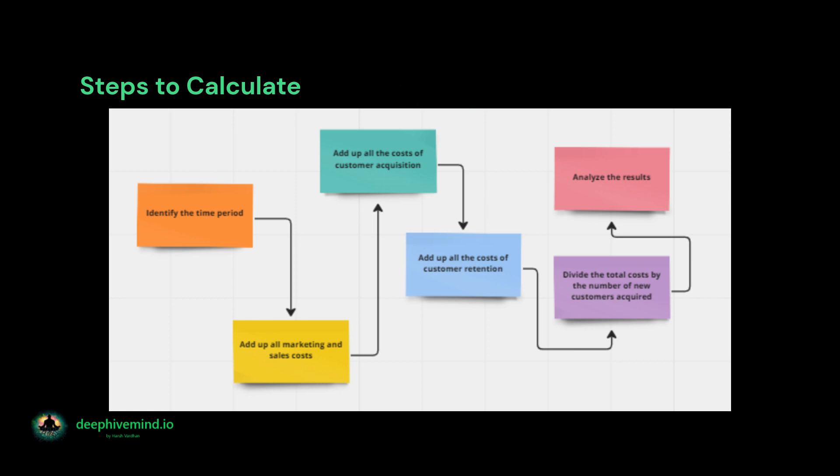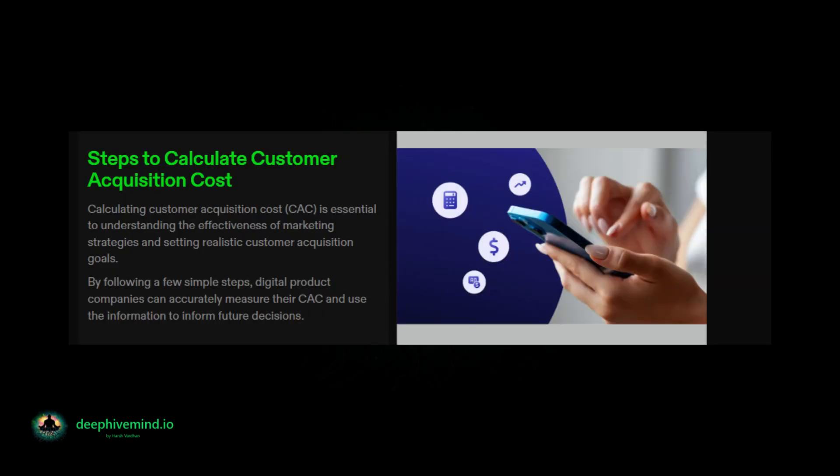Step five — divide the total costs by the number of new customers acquired: after adding up all the costs, divide the total by the number of new customers acquired during the time period. This will give you the CAC for that period. Step six — analyze the results: compare your CAC to industry benchmarks and your own historical CAC data to determine how well your customer acquisition costs are performing. Look for trends or changes over time and adjust your marketing and sales strategies accordingly.